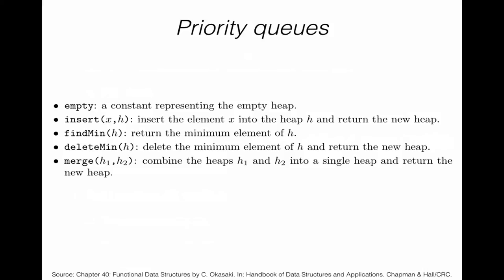Now let's look at a tougher example to see more of functional data structures in action — in particular how laziness and lazy evaluation as in Haskell interacts with persistence. We look at priority queues with operations: constructing the empty queue, inserting an element into the heap, a find-min operation to retrieve the minimum element, deleting the minimum element, and merging two priority queues as if inserting all elements of one queue into the other.